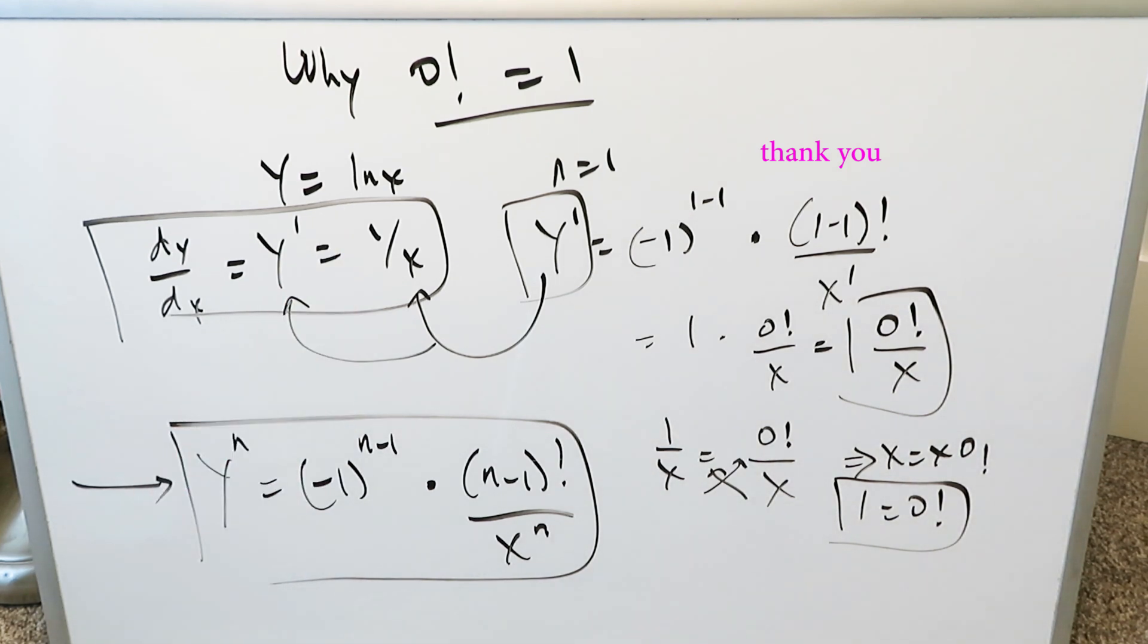This template then comes into play where n is equal to 1, and it takes you all the way forward to answer that question, why 0 factorial is equal to 1, and I've shown you. I hope you enjoyed this video. Have a good day.